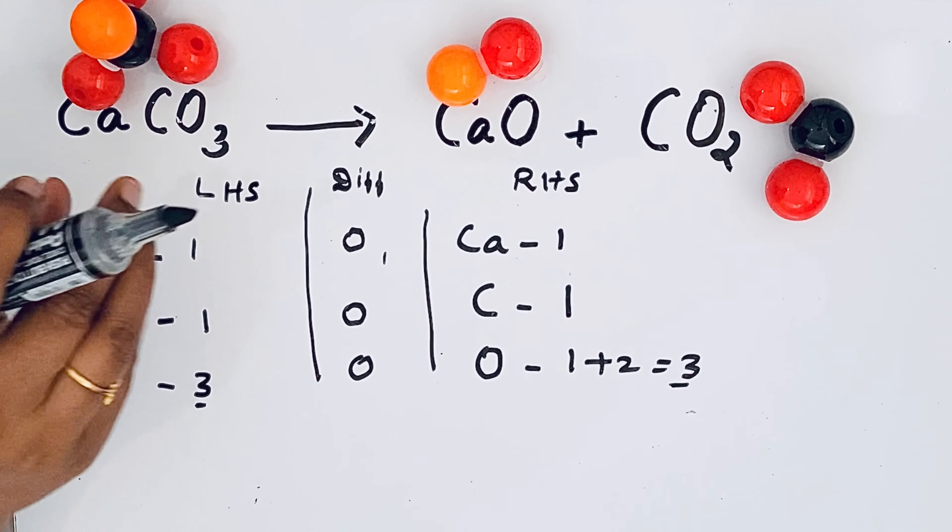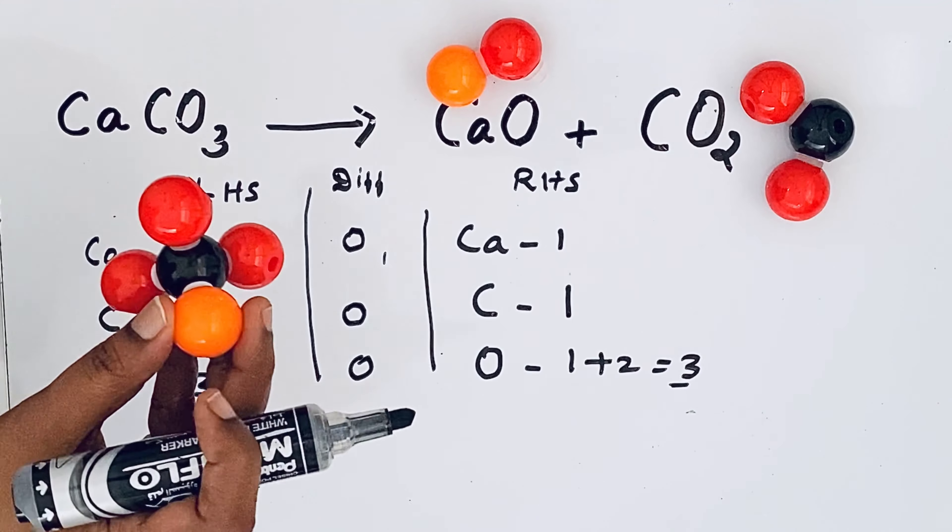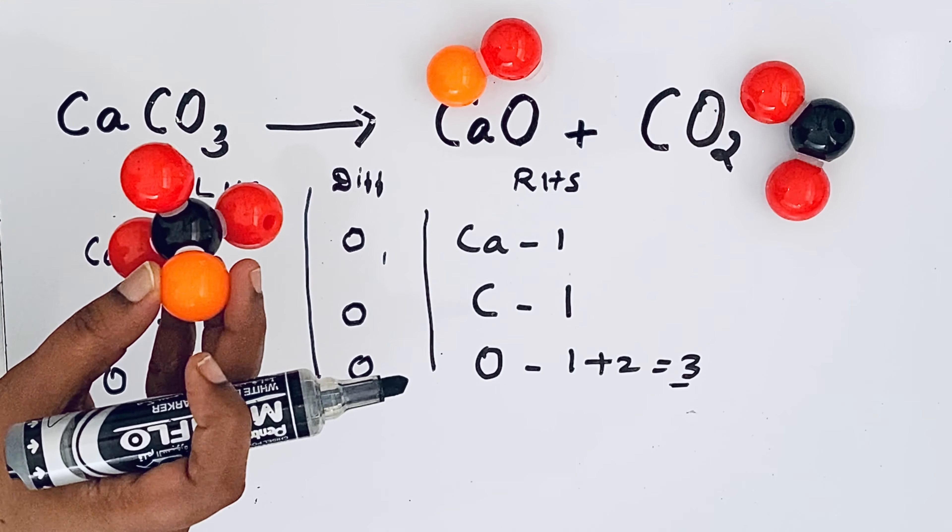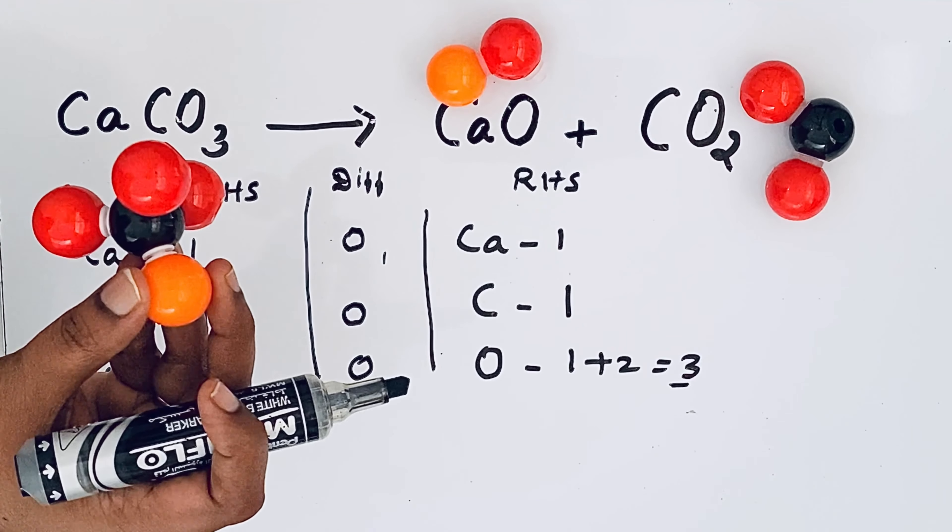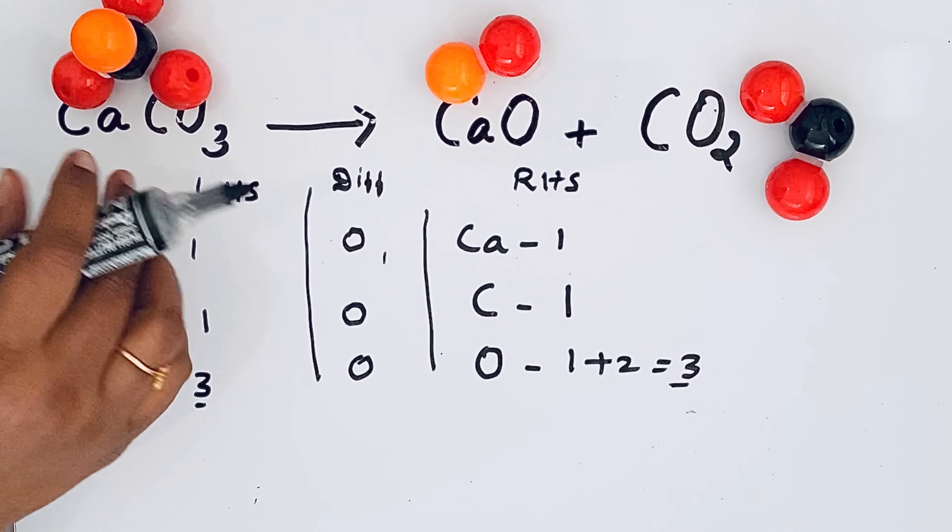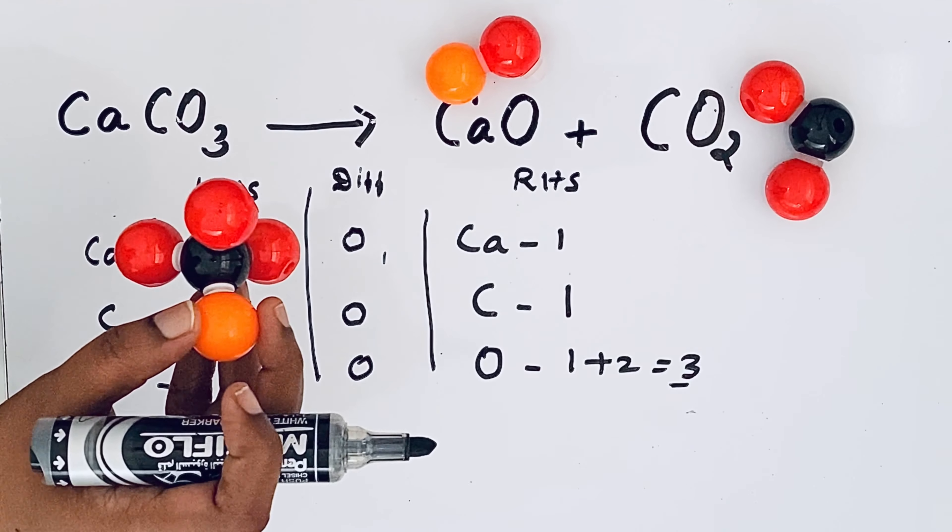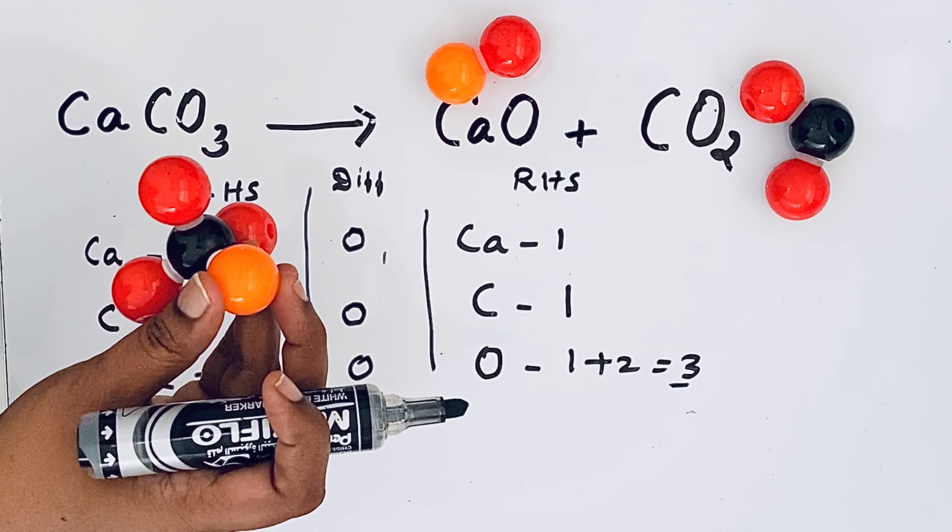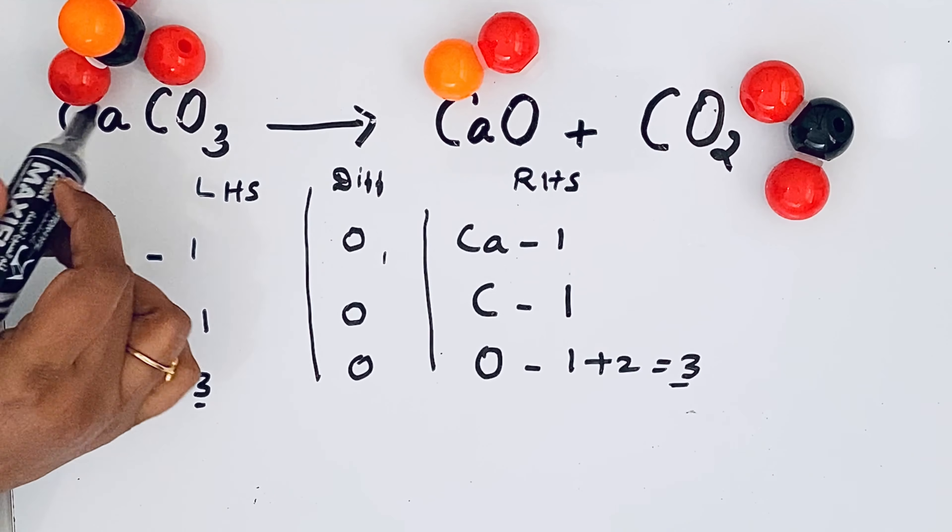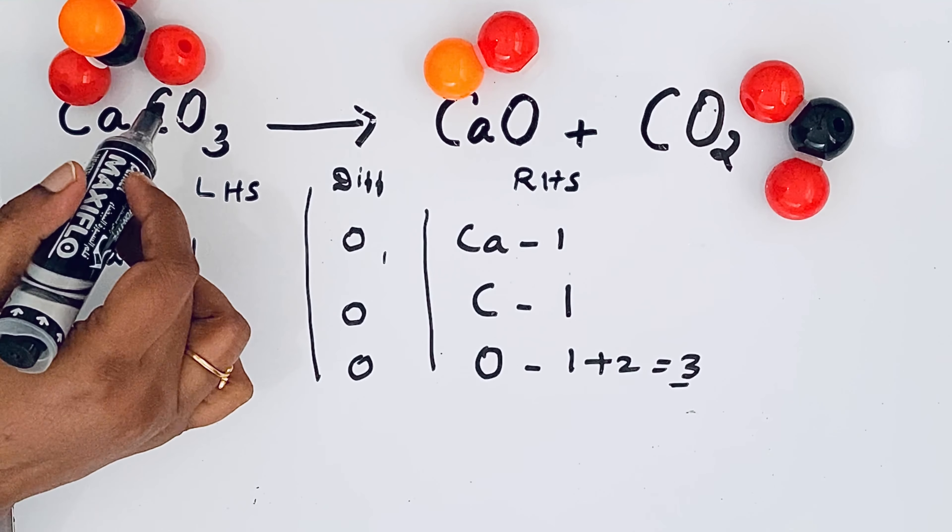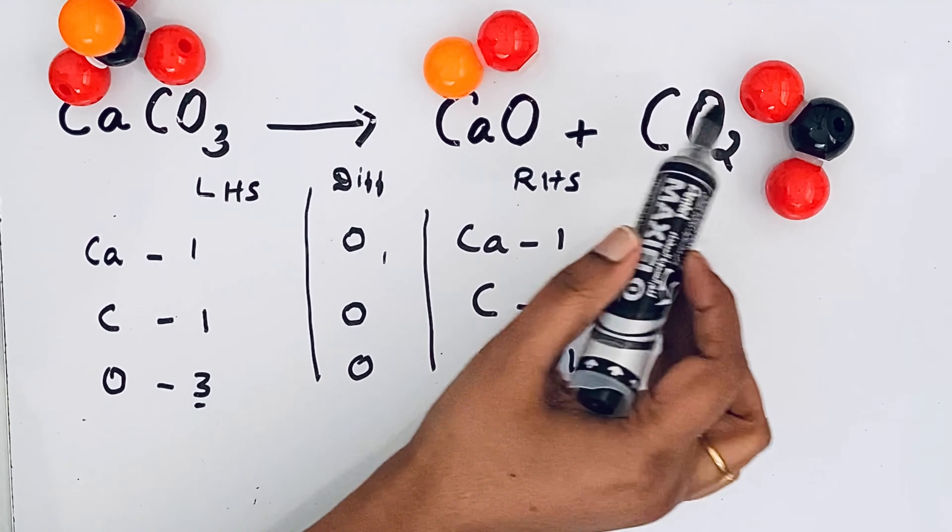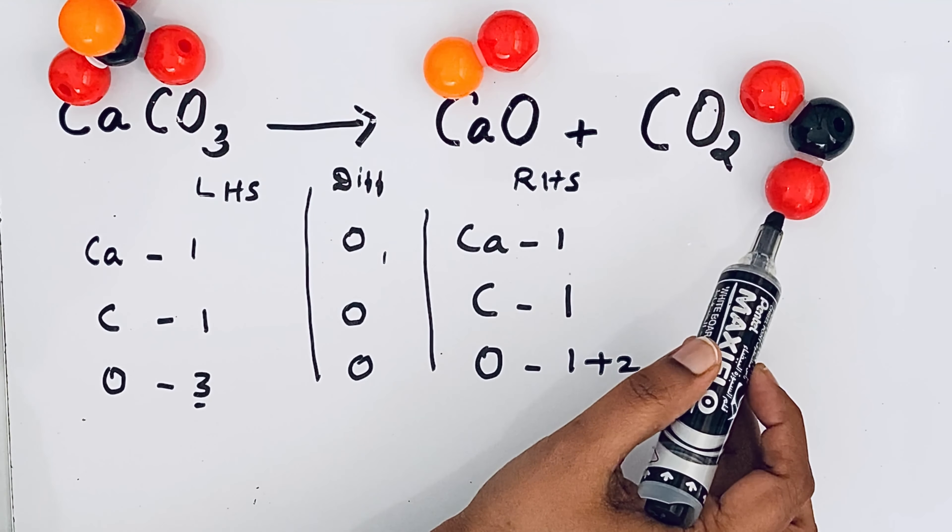Just for a moment imagine these balls are representing atoms. So here total number of balls is five. That means the number of atoms in the reactant side is five. The red ball represents the oxygen atom and the black one for carbon and the orange one for calcium. So here three red balls, that means three oxygen atoms. Here also we have the three red balls, three oxygen atoms.